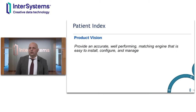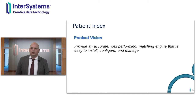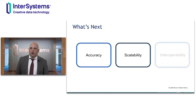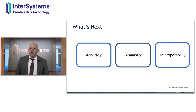Our product vision for Patient Index remains the same: to provide an accurate, well-performing matching engine that is easy to install, configure, and manage. The last two release cycles for Patient Index were focused on the IRIS platform and single sign-on OAuth adoption, as well as Provider Directory development due to regulatory drivers for public directory APIs and no-surprise billing requirements. We do have a clear vision of where we want to go. Our forward-looking vision is focused on accuracy, scalability, and interoperability. We have done some proof of concept with customers. We are not yet ready to sign a definitive release schedule, but some areas we are looking at include machine learning, referential matching, and biometrics.